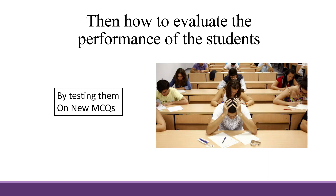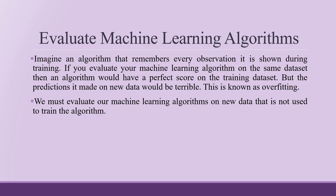Once the algorithm has been trained, we should provide a new dataset for testing. Imagine an algorithm that remembers every observation shown during training — if you evaluate it on the same dataset, it would have a perfect score on training data, but predictions on new data would be terrible. This is known as overfitting.